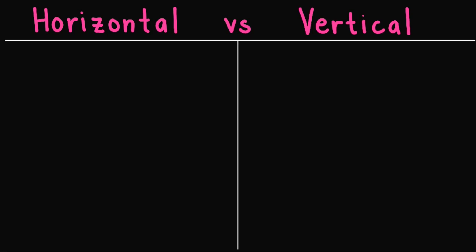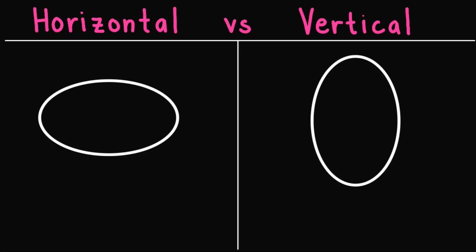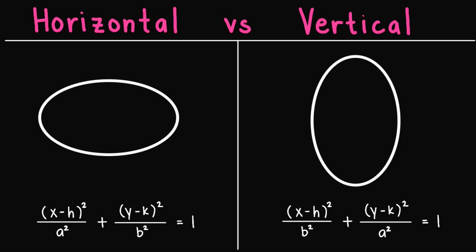So first, recall that given a horizontal and vertical ellipse, their equations are given by this and this respectively. We know that the point (h, k) refers to the center of the ellipse, a refers to the length of the semi-major axis, while b refers to the length of the semi-minor axis. So this is just a recall of what we have learned so far.